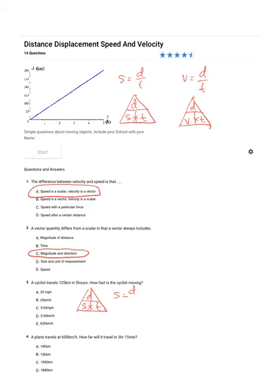Speed equals distance over time. The distance is 125 kilometers. It took 5 hours. So 125 divided by 5 is going to be 25 kilometers per hour. How do I know those units are kilometers an hour? Because the distance was in kilometers and the time was in hours.